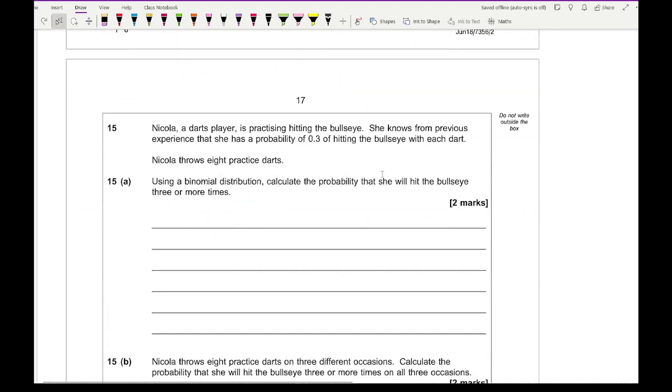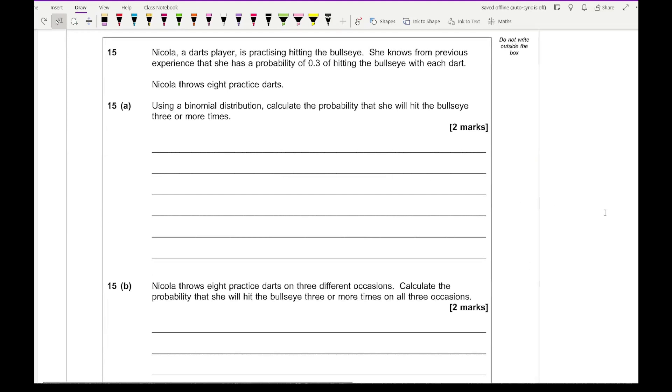Question 15 says that Nicola, a darts player, is practicing hitting the bullseye. She knows from previous experience the probability is 0.3 of hitting the bullseye with each dart. Nicola throws eight practice darts. Using binomial distribution, calculate the probability that she will hit the bullseye three or more times. Let's set up the parameter, B with sample size 8 and probability of success 0.3. We want to work out the probability that x is greater than or equal to 3.